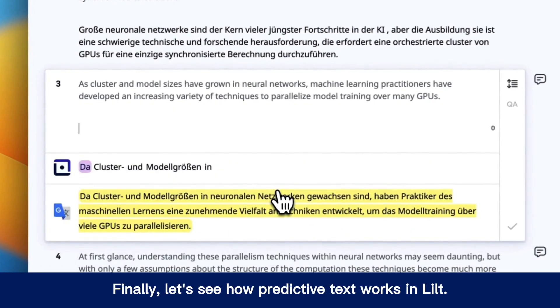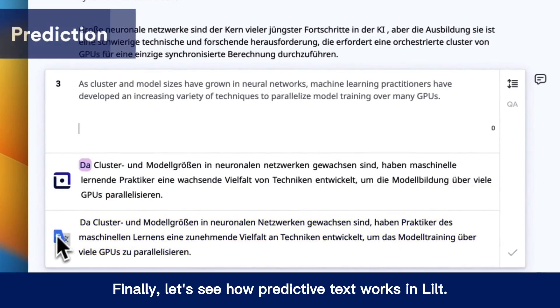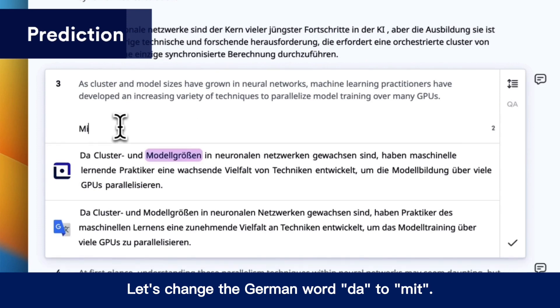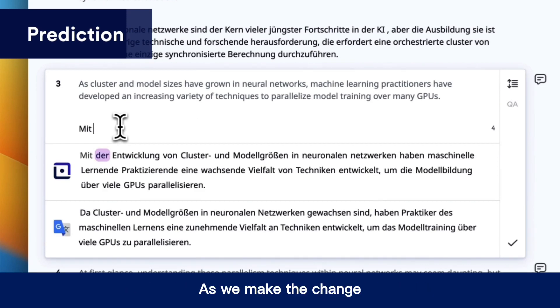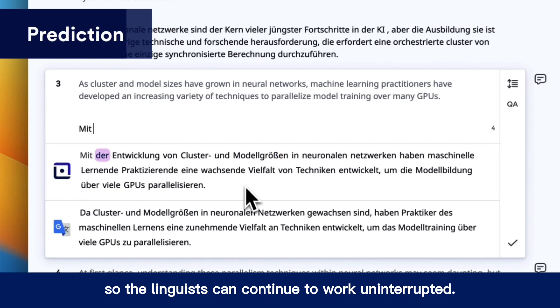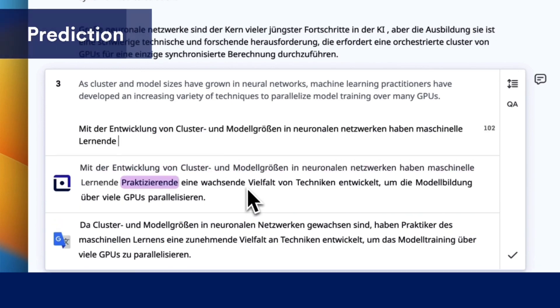Finally, let's see how predictive text works in LILT. Let's change the German word "DA" to "MIT." As we make the change, the model updates its prediction so the linguist can continue to work uninterrupted.